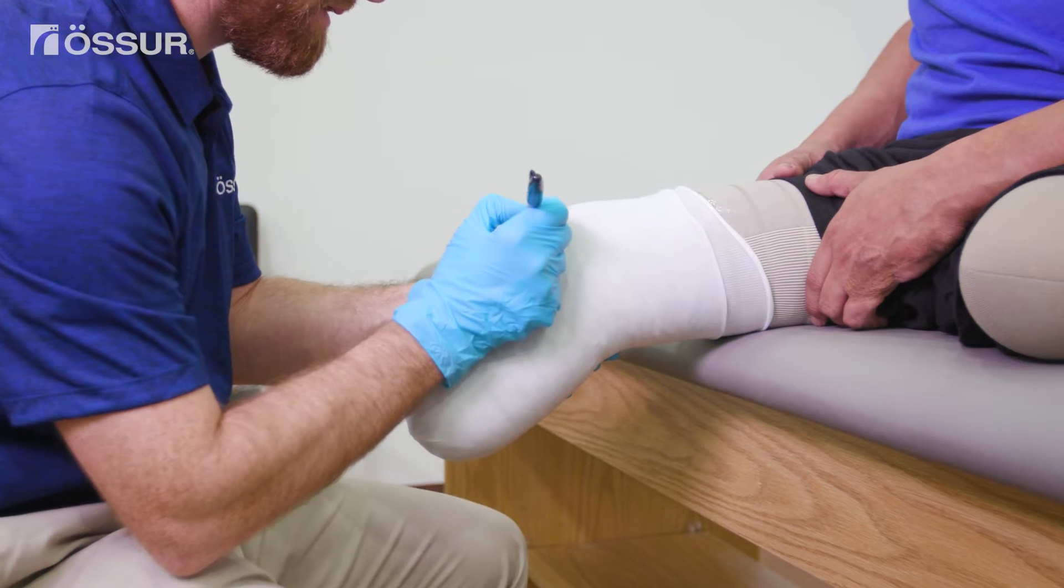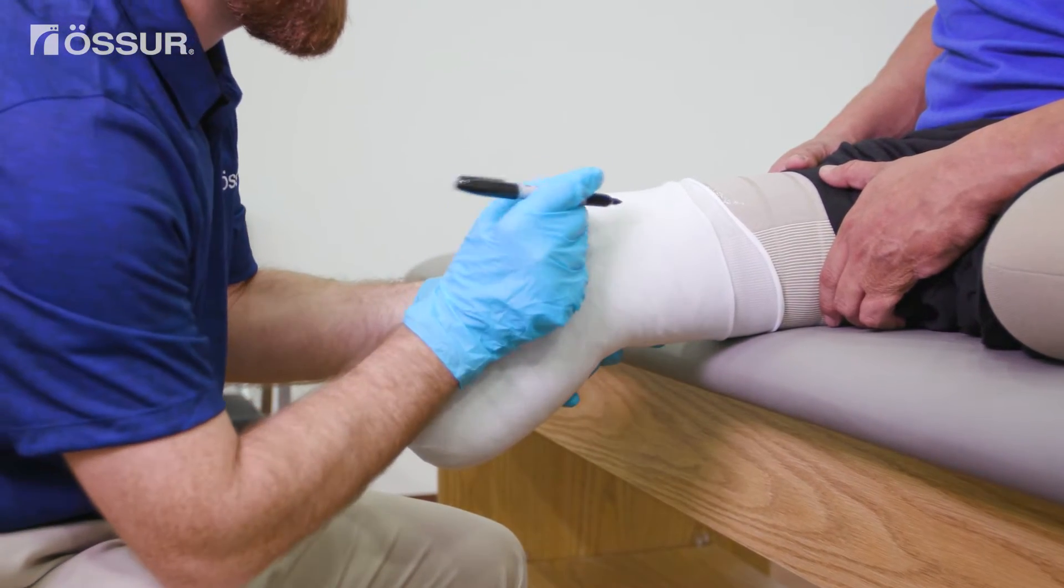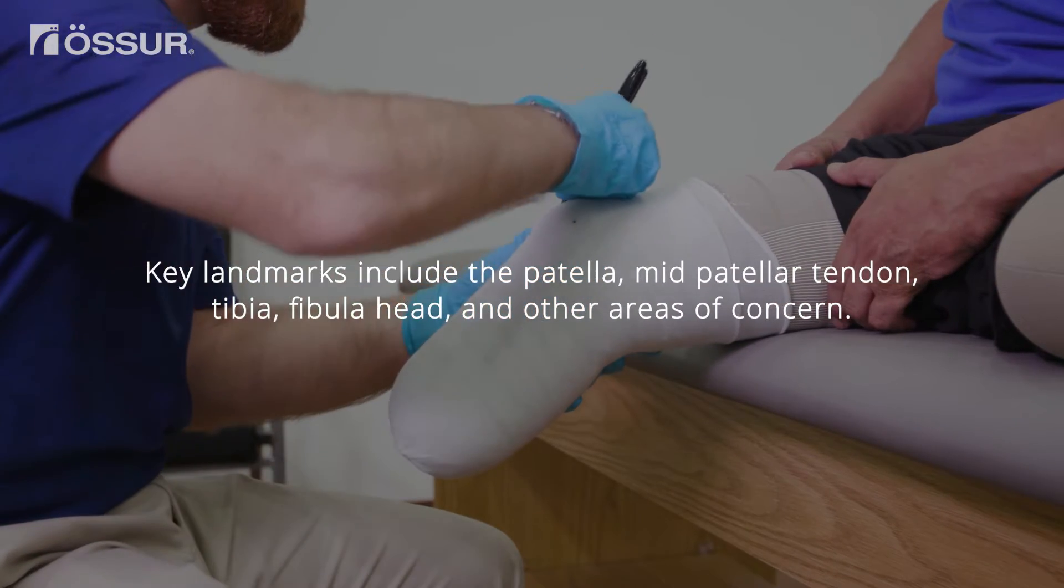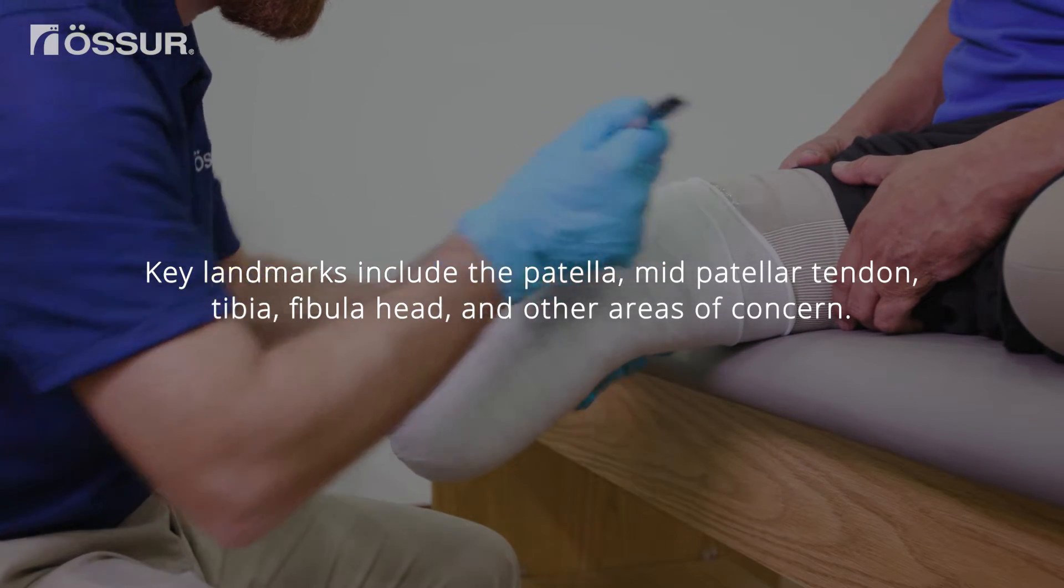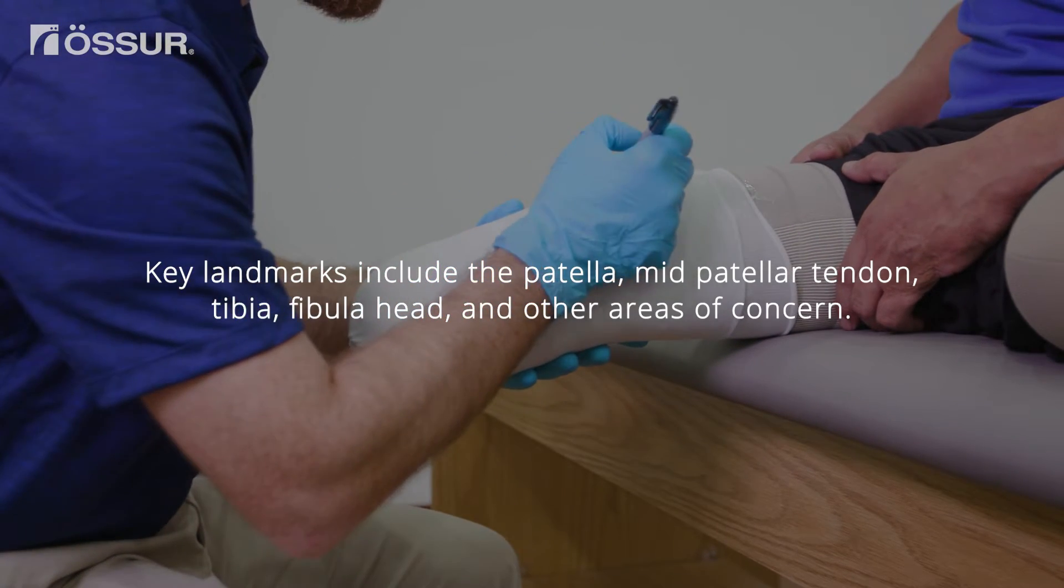Next, identify the key landmarks on the nylon with a marker. Key landmarks include the patella, mid-patellar tendon, tibia, fibula head, and other areas of concern.